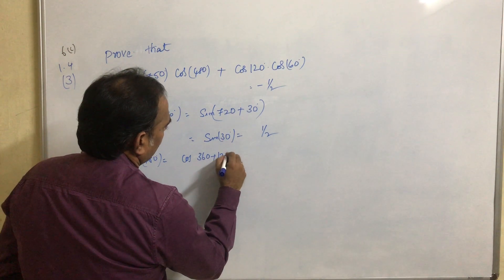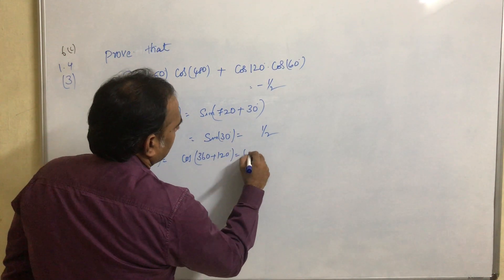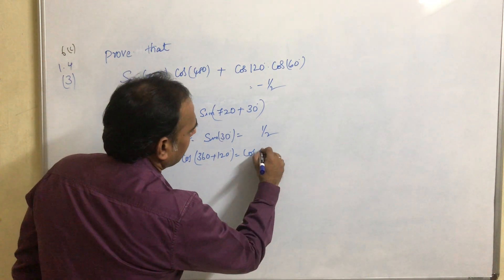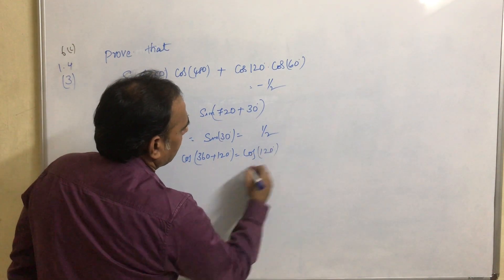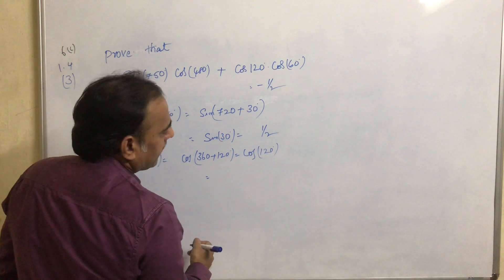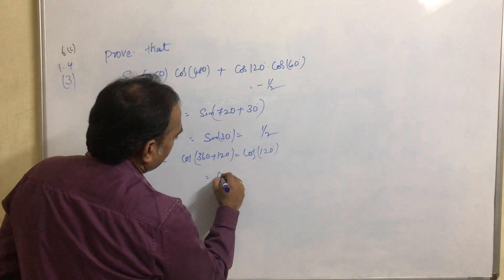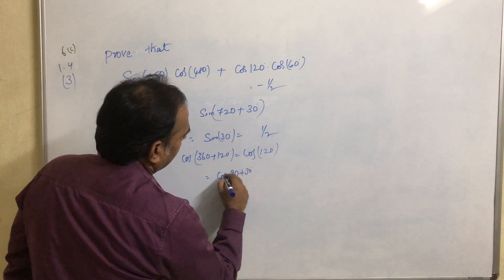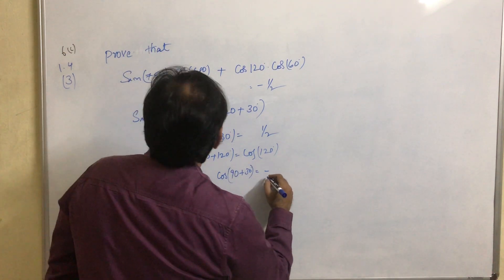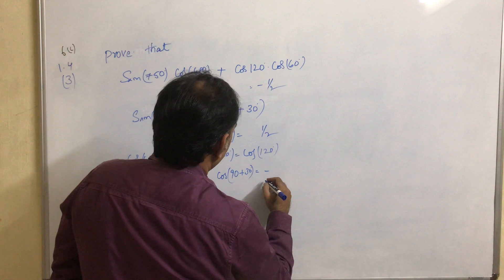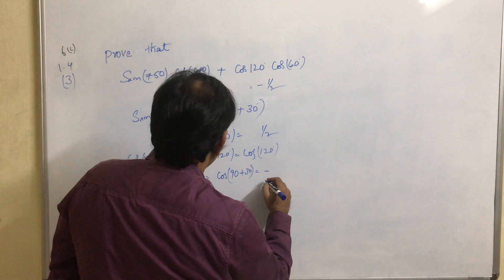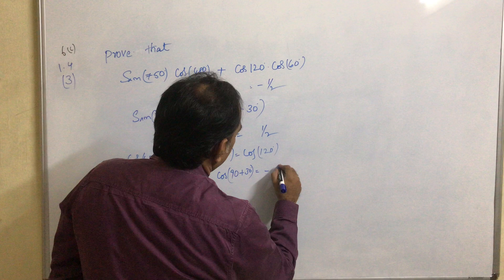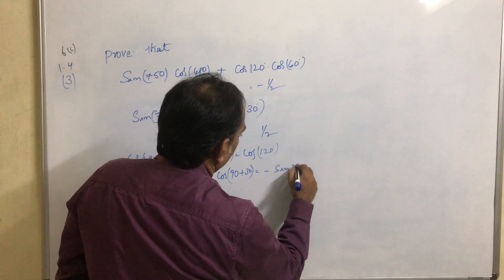Now take cos480. cos480 can be written as cos(360+120), which equals cos120. So cos480 equals cos120.